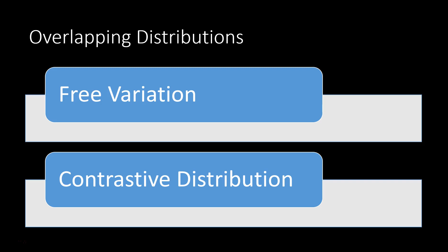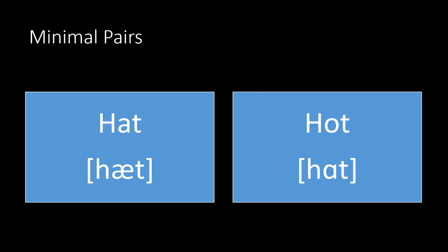Whereas if you have certain sounds that appear in the same place, like voiced and voiceless versions of similar sounds, I could have the word "butt" and I could have the word "putt" — butt and putt. Those appear in the same place, before the exact same sounds. The only difference is one is voiced, one is voiceless. But in this case, they actually are different words. Whenever you have similar sounds appearing in the same place, but the difference in those sounds creates different words, then we say those sounds are in contrastive distribution. Those sounds appear in the same place, but they make different words.